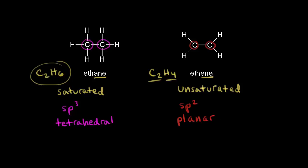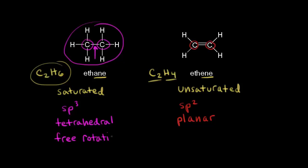Let's look at the bonding between the two carbons. For ethane, this sigma bond between the two carbons has some free rotation, so different conformations of the ethane molecule are possible. We have free rotation about the sigma bond between our two carbon atoms.